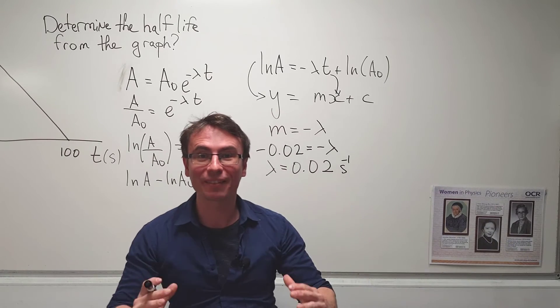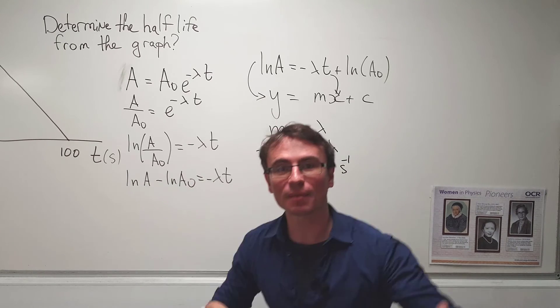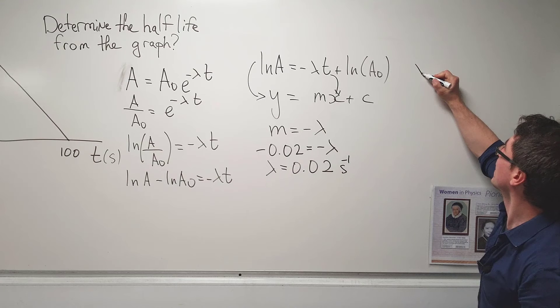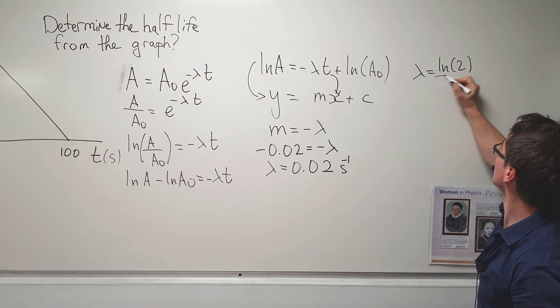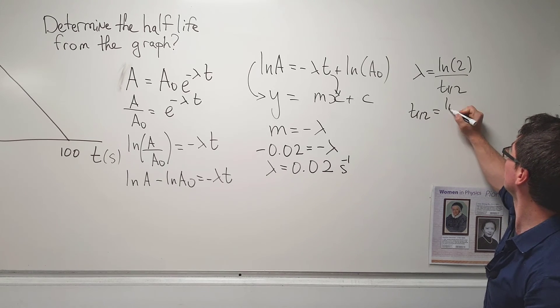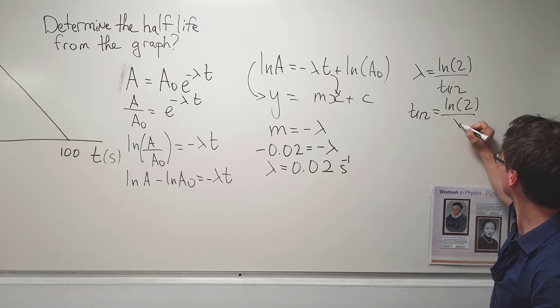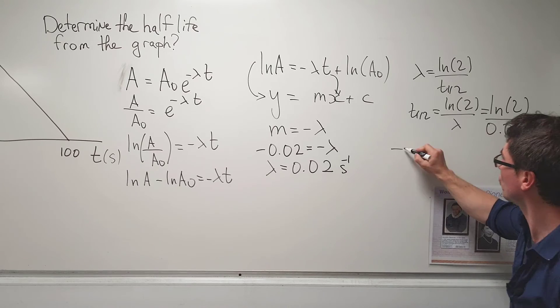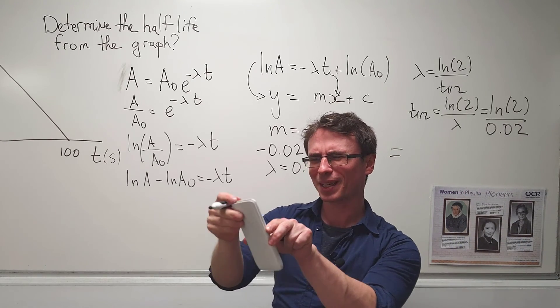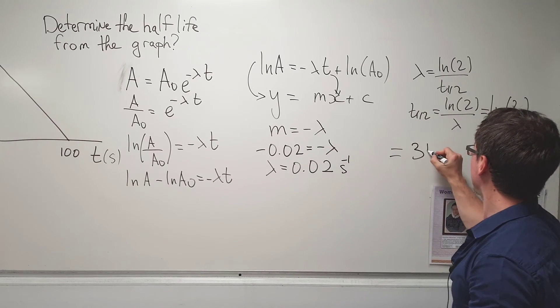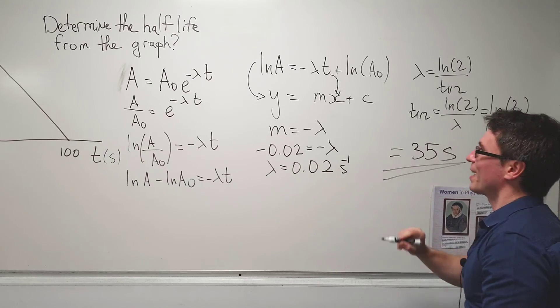Remember, anytime we have the decay constant, we actually have the half-life because the equation that links them together is simply that lambda is equal to ln of 2 divided by the half-life, meaning that the half-life is just equal to ln of 2 divided by lambda, which is just equal to ln of 2 divided by 0.02. And if we put this into a calculator, we're going to get around 34.65, so let's just say about 35 seconds.